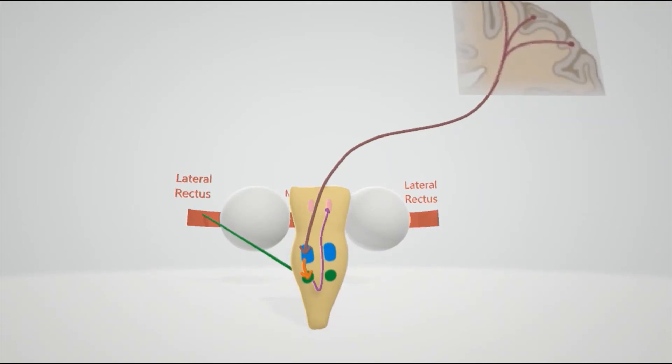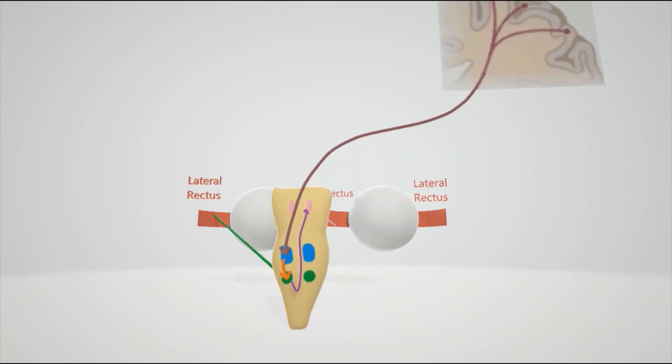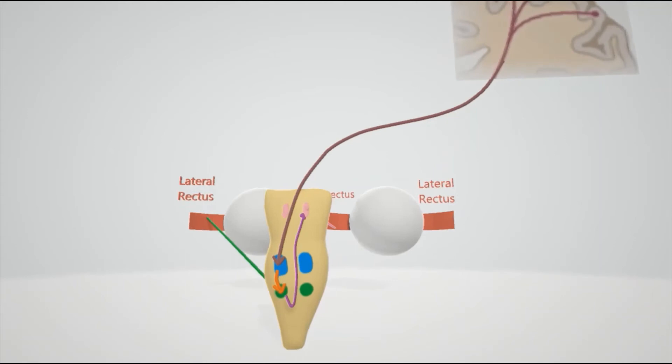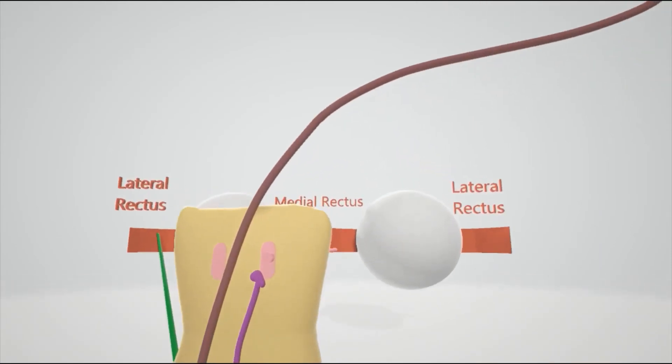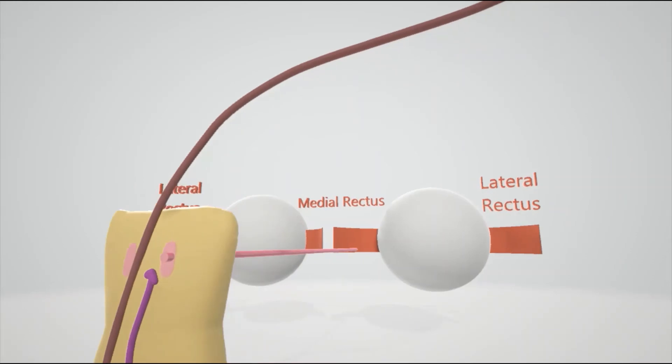And so one signal goes directly to the lateral rectus on that side. The lateral rectus on the left side is going to contract. And what happens is that there's another signal sent to the oculomotor nucleus. You see that pink area is the oculomotor nucleus right here. That's another signal that's sent from the abducens, and it goes to the right medial rectus.